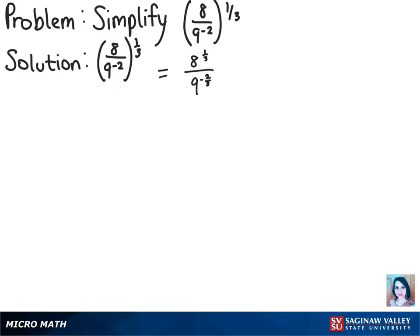So we can rewrite this as the cubed root of 8 over 9 to the negative 2/3 power. We know that the cubed root of 8 is 2, so next we'll have 2 over 9 to the negative 2/3 power.